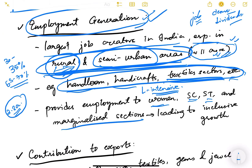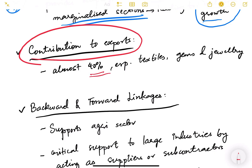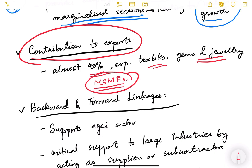MSMEs provide employment to women, SCs, STs, and marginalized sections of society, leading to inclusive growth. Examples include handlooms, handicrafts, and the textile sector — all labor-intensive sectors that employ more people per unit of production. Almost 40 percent of exports from our country come from MSMEs, especially textiles and gems and jewelry.